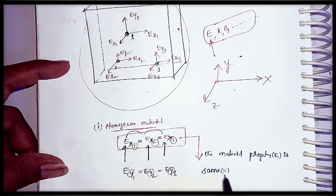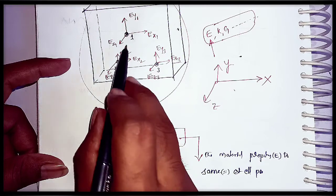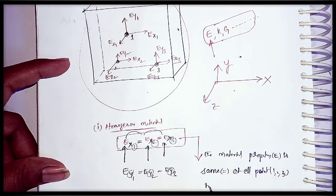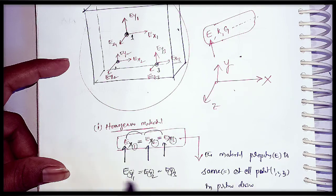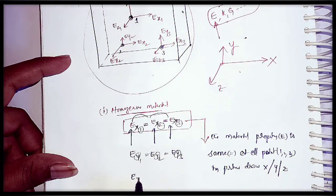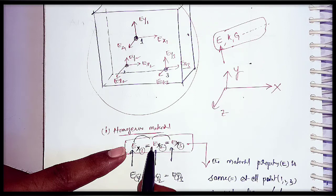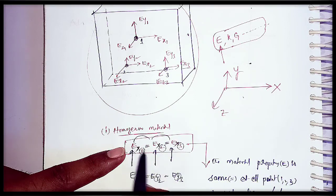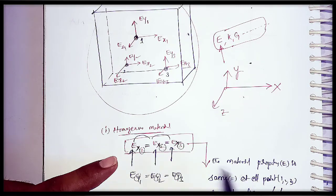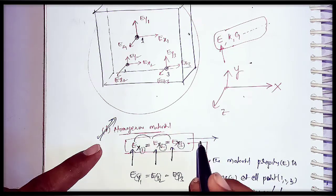The material property is same at all points — points 1, 2, and 3 — in a particular direction, whether that is the x direction, y direction, or z direction. We can also write Ez1 = Ez2 = Ez3. Whatever the property may be — Young's modulus or shear modulus — the material property is same at all points in a particular direction. That property is called homogeneous. If this condition is satisfied by the material, then that material is called a homogeneous material.